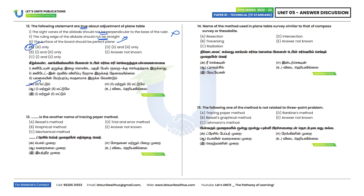Thirteenth question: What is the another name of the tracing paper method? The tracing paper method is also known as the mechanical method. Option C is the correct answer. Other methods include the graphical method, trial and error method, and Lehmann's method.